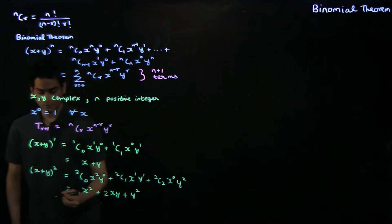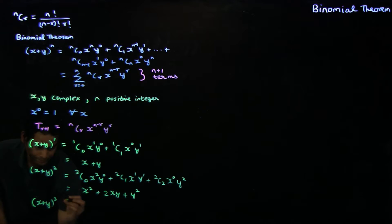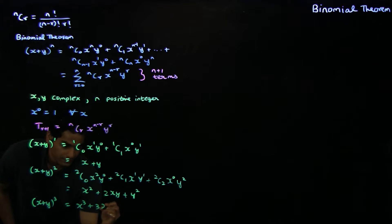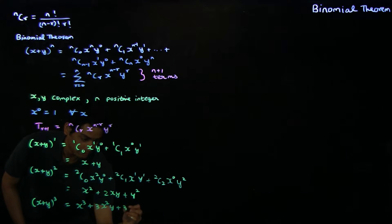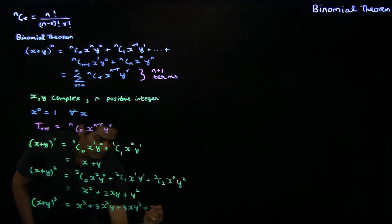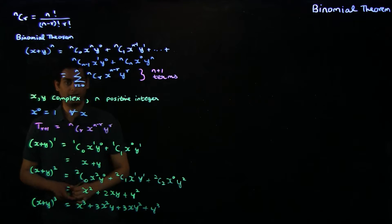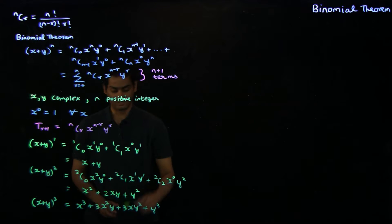Similarly, you can derive that x plus y, the whole cube, is x cubed plus 3x squared y plus 3xy squared plus y cubed, and you can derive this result from the binomial expansion as well.